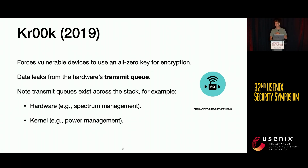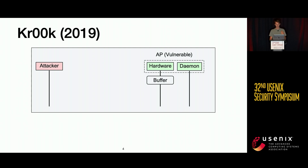In the CROQ attack, transmit queues were exploited. These queues exist across the entire stack — two examples are the hardware stack, which was the case with CROQ, where queues exist for spectrum management, and queues in the kernel for power management when client stations try to save energy.